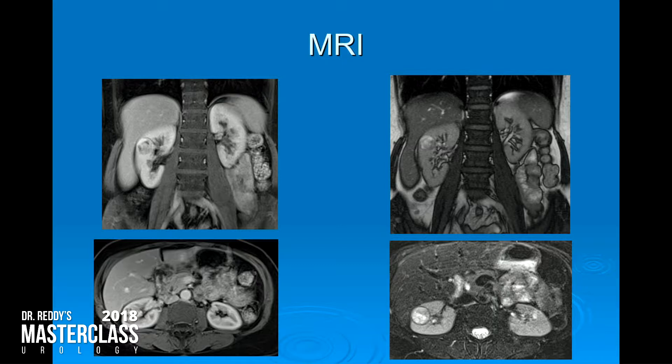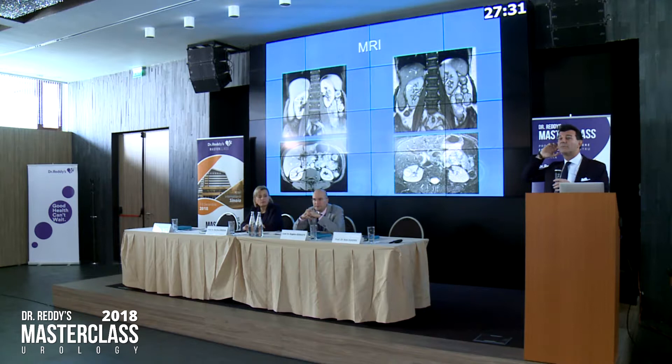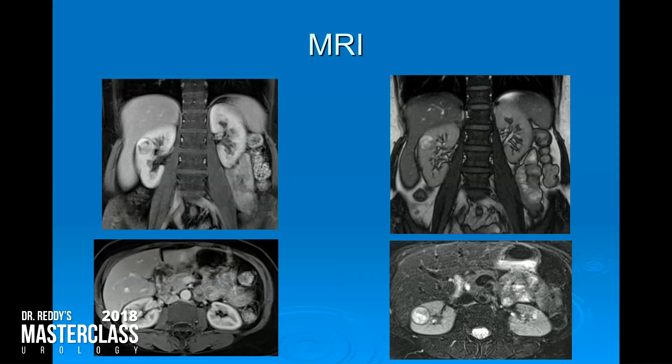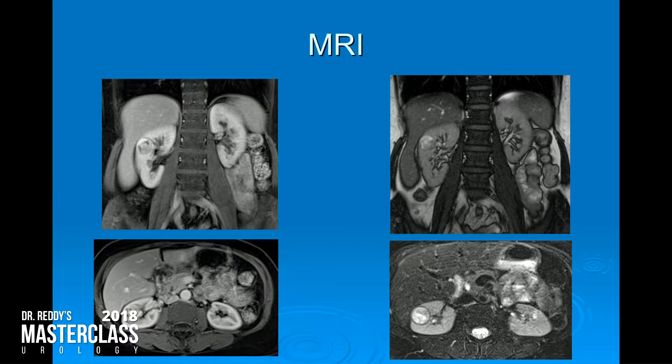Everybody sees the tumor — it's a no-brainer. What would you do with this patient? Partial nephrectomy? Radical nephrectomy? We do partial nephrectomies in these cases. Because removing the whole kidney — I may end up with her lawyer. The idea is to remove only the tumor. Why would you say nephrectomy? It's a pretty central tumor.